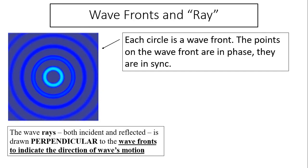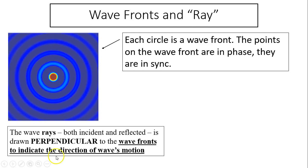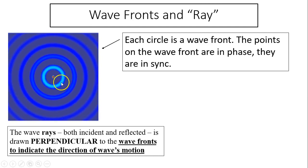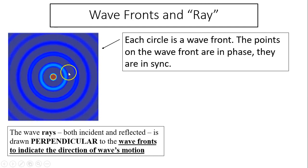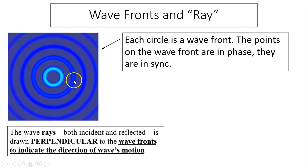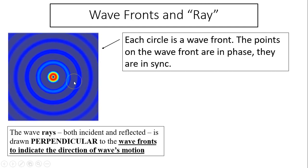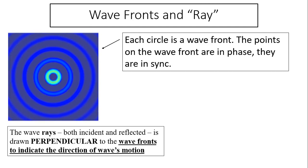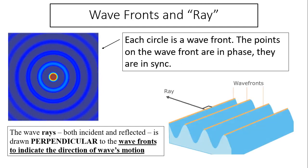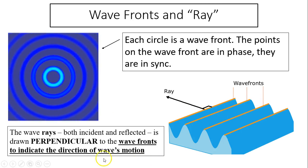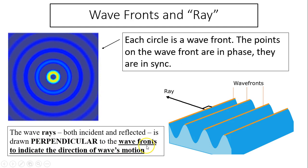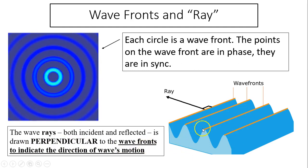Wavefronts and Rays. So what's a wavefront? When a water drop falls, it forms concentric circles. Each circle is a wavefront — all the points on the circle will have the same phase, meaning they vibrate in sync. They either go up in the same displacement or go down in the same displacement. Wave rays are drawn perpendicular to the wavefronts.